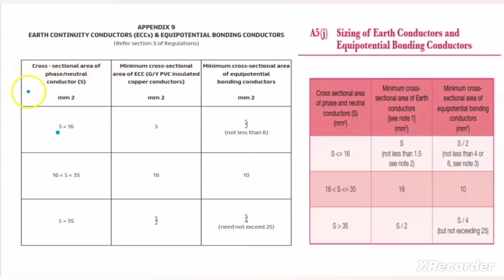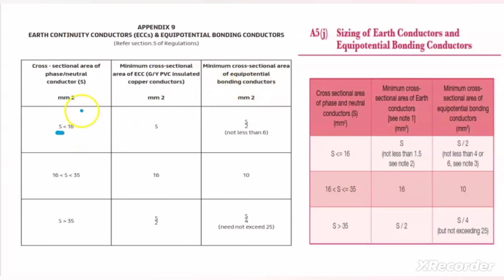From this table, it is very clear that the first heading is written as cross-section area of phase or neutral conductor. So S here represents the cross-section area of phase conductor or neutral conductor. The second column heading mentions the minimum cross-section area of ECC conductor, that is earth continuity conductor. And the third column shows the minimum cross-section area of the equipotential bonding conductor. So based on the phase conductor size or neutral conductor size, we have to select the ECC conductor size and equipotential bonding conductor size.